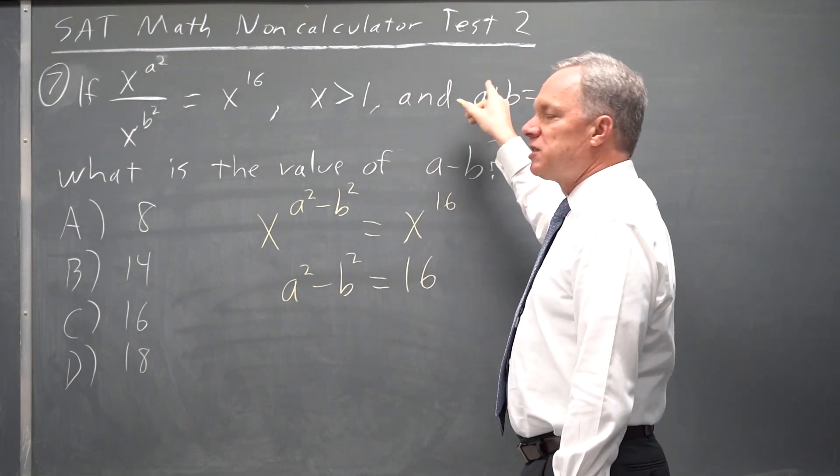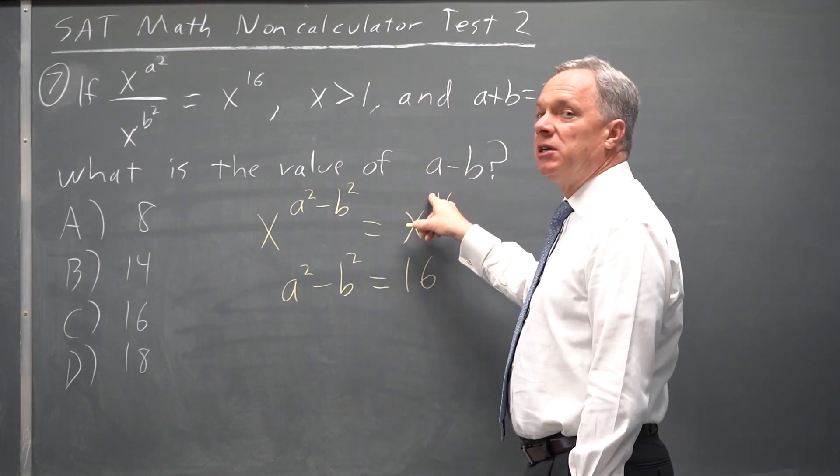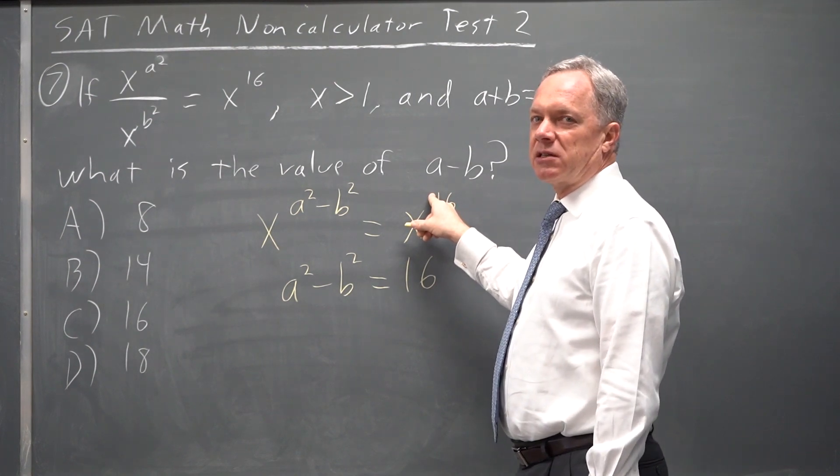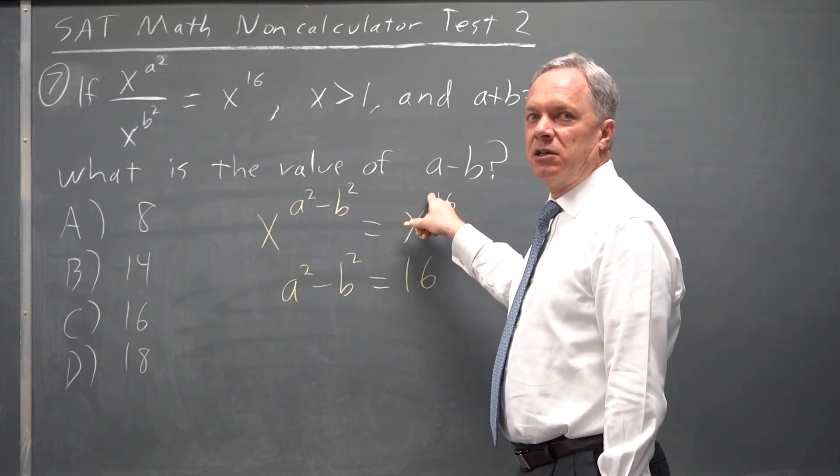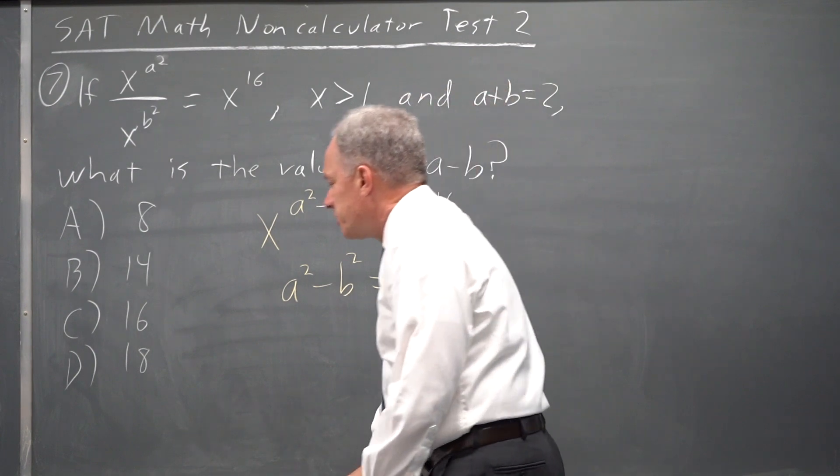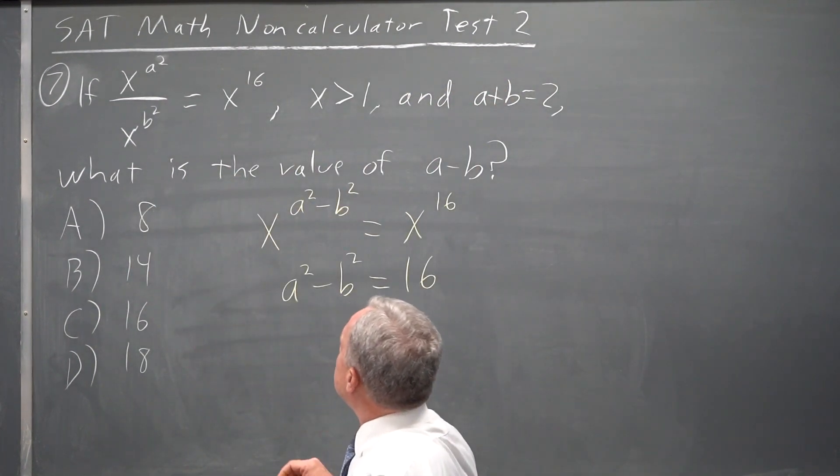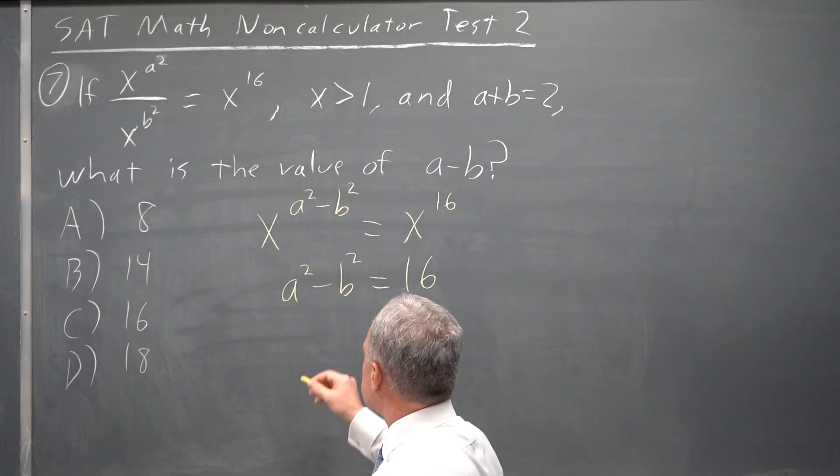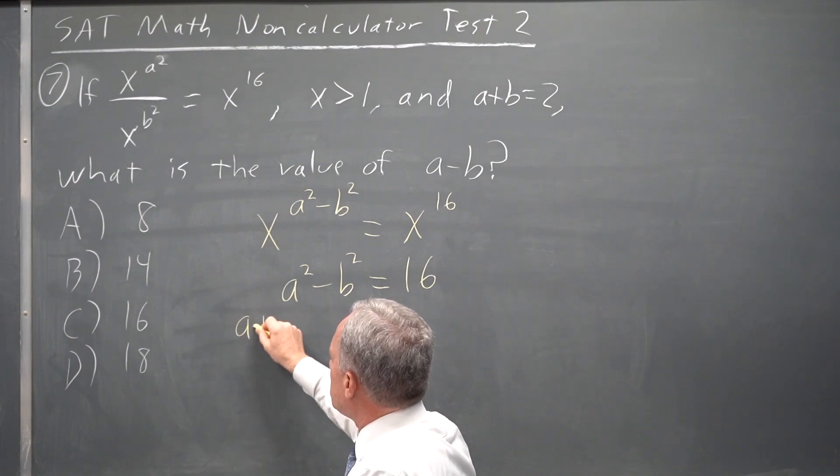Now they've given me a plus b and they're asking for a minus b. College Board likes this difference of two squares. We're going to factor a squared minus b squared. Typically, if you see an a plus b and an a minus b, that's what you'll be doing.